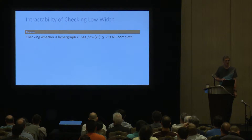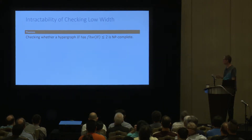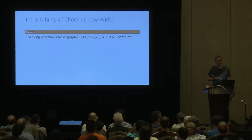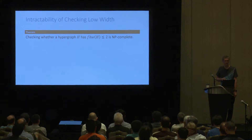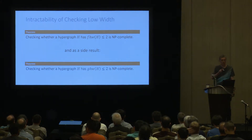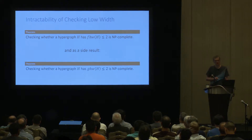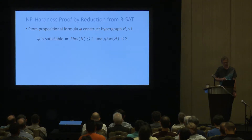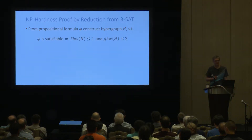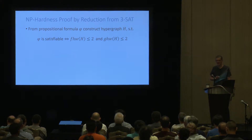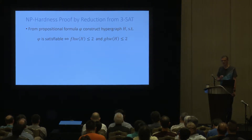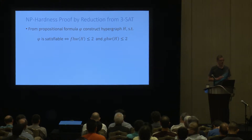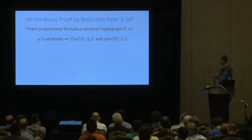The first main result of our work is to close these gaps. We proved that the check problem for fractional hypertree width is NP-complete for k = 2. As a side result of this proof, we also close the special case of k = 2 for generalized hypertree width. The NP-hardness proof is very technical; I will not show all details, but I would like to highlight some key ideas.